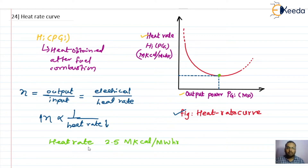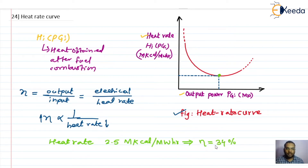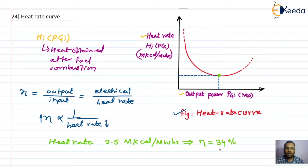For this typical heat rate value, the corresponding efficiency is around 34% only. This is because not all the heat energy input given to the generator will be converted into electrical power. That is why for this typical value of heat rate we have an efficiency of 34%.